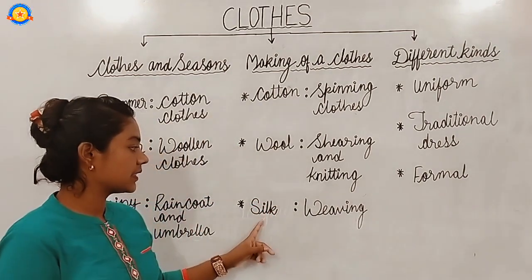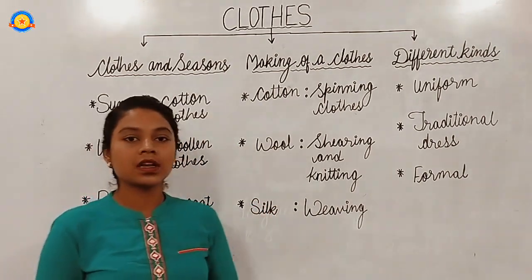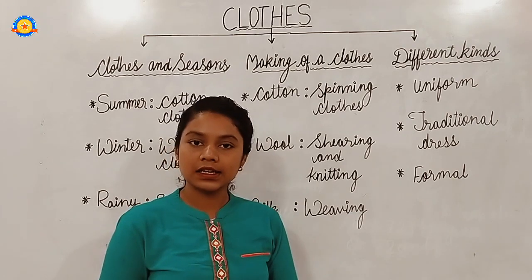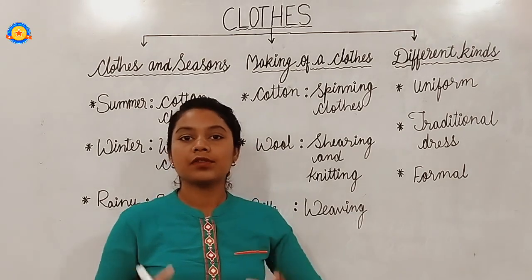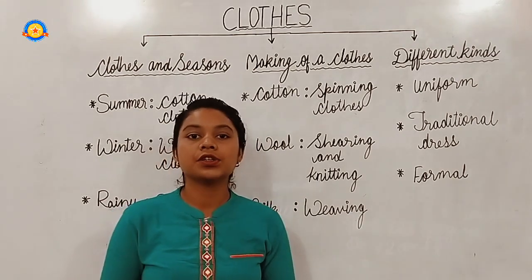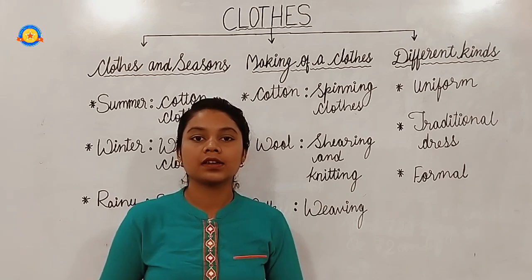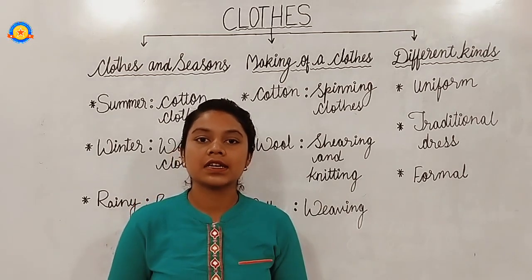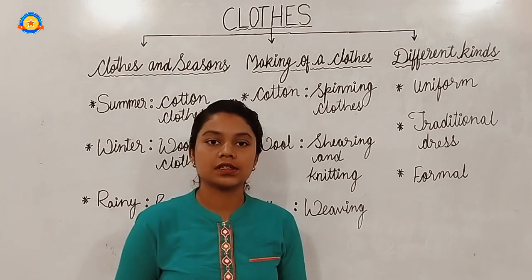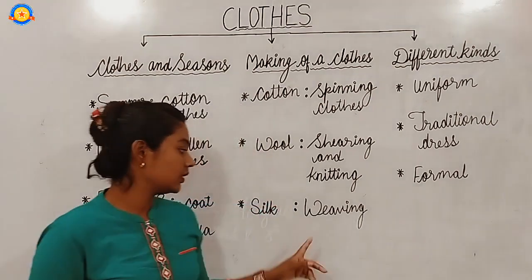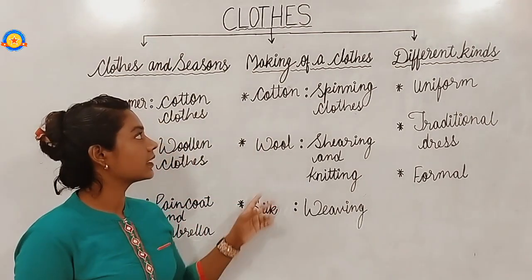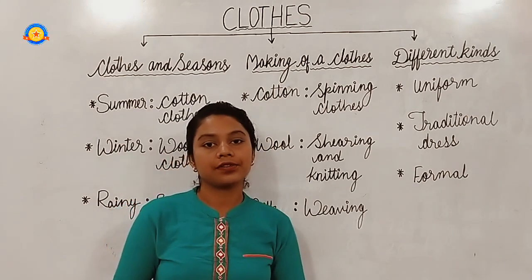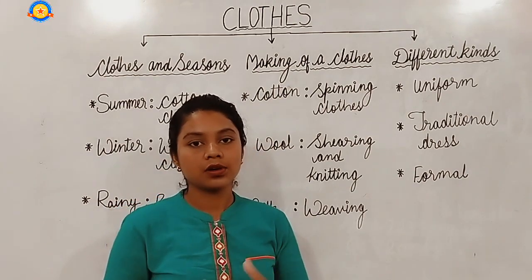Woolen clothes can be knitted at home or they can be made in factories. Next, we have silk. We get silk from the silkworm. We weave the silk thread to make different kinds of clothes like sarees, skirts, and kurtas. This was about silk — how we make different kinds of clothes.